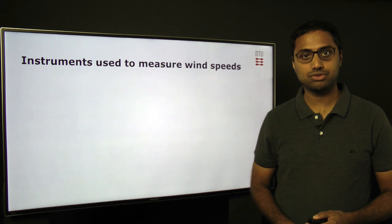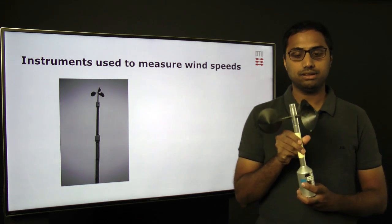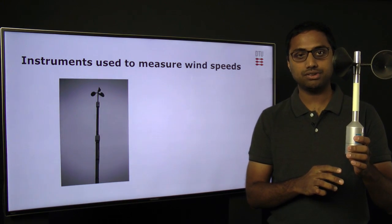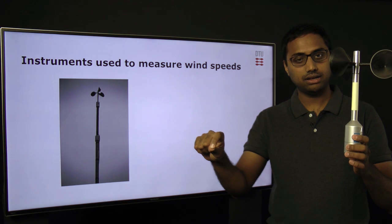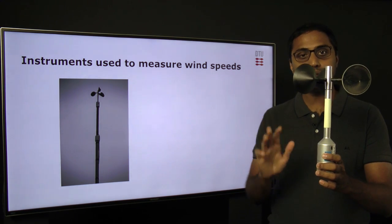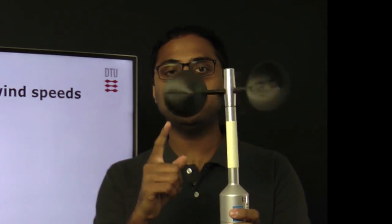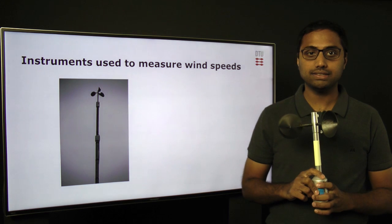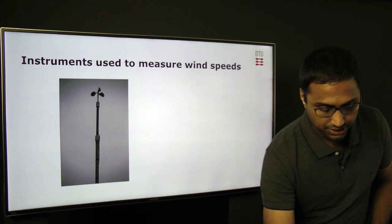Let's take a look at instruments used to measure wind speeds. The first is the cup anemometer. You install it on a meteorological mast or a steel structure with booms, and mount the instrument on top. When the wind blows, the conical cups rotate with the wind speed, and the rate of rotation is proportional to the wind speed. This is how you measure wind speed using a cup anemometer.